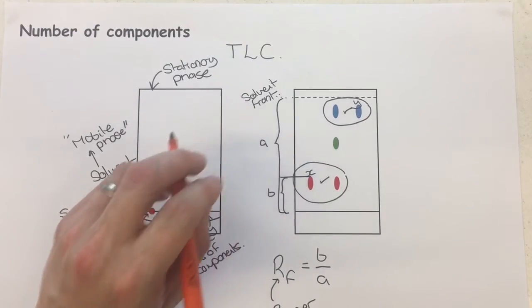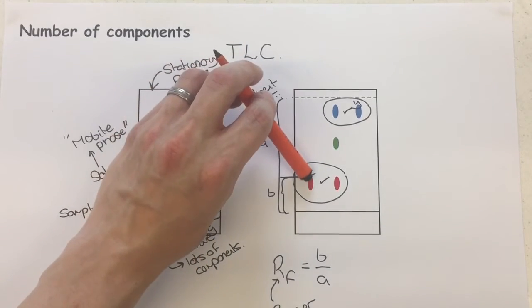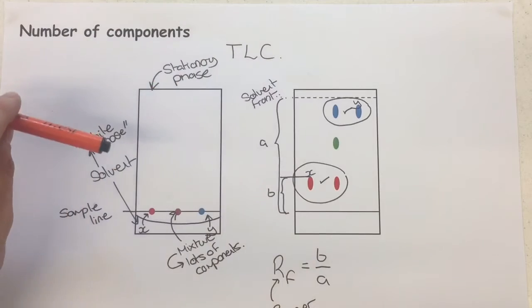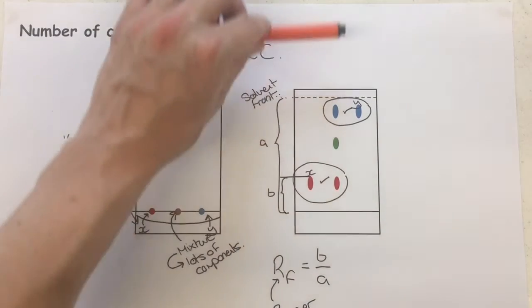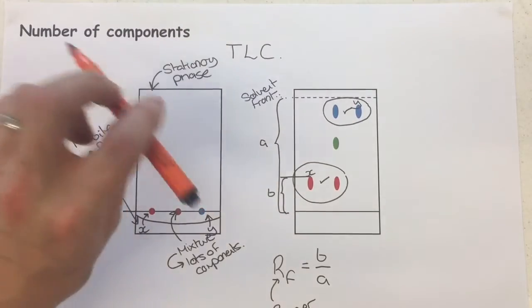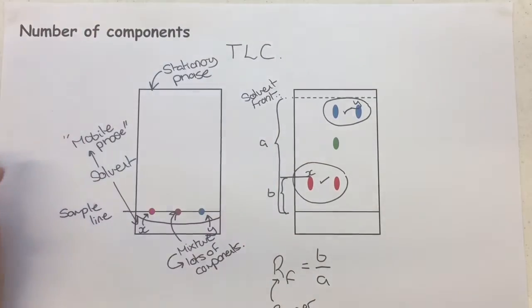In contrast, just to make that really clear, X could be insoluble in the solvent, our mobile phase, and so it wasn't able to travel with it as it went up, and or it could be very attracted to the stationary phase.